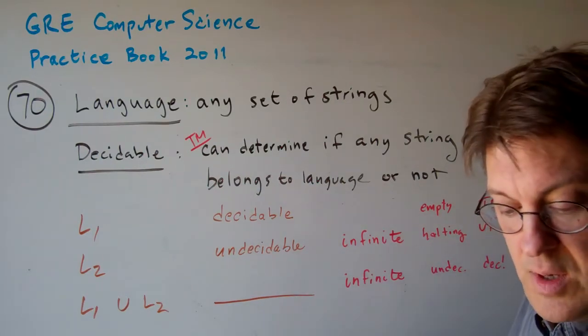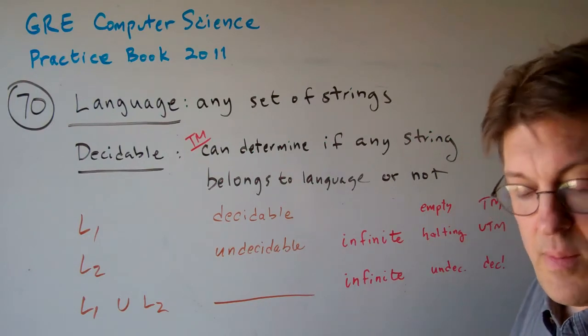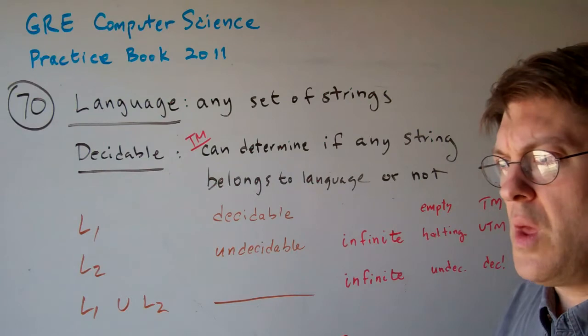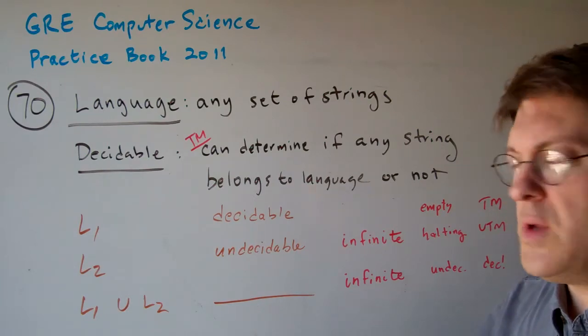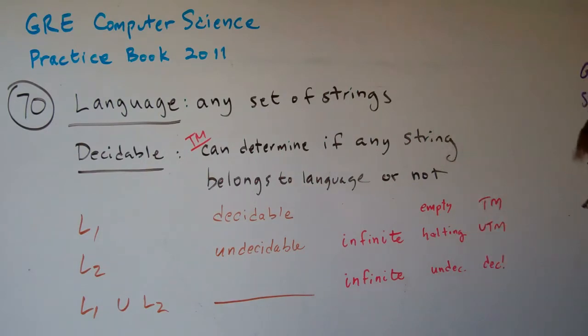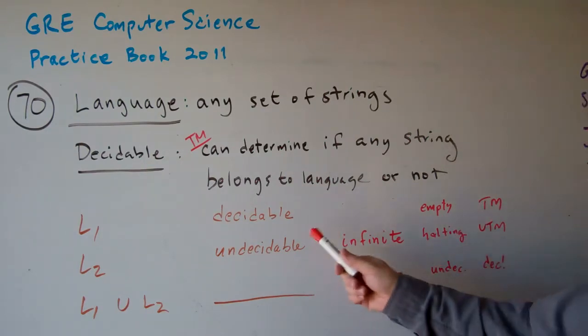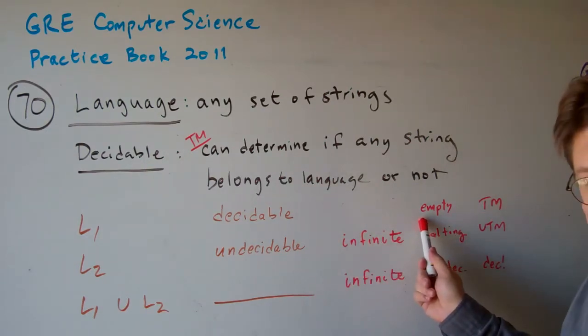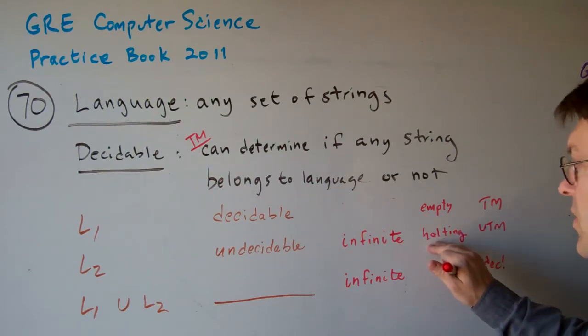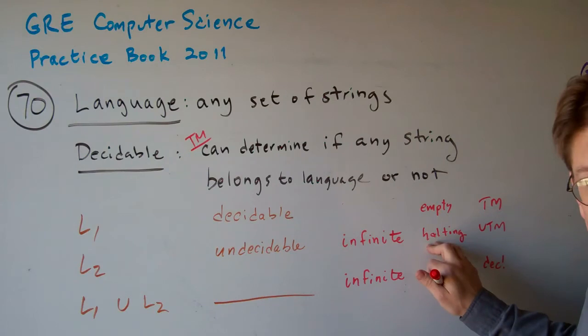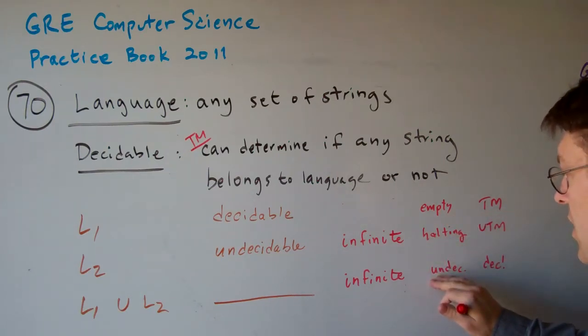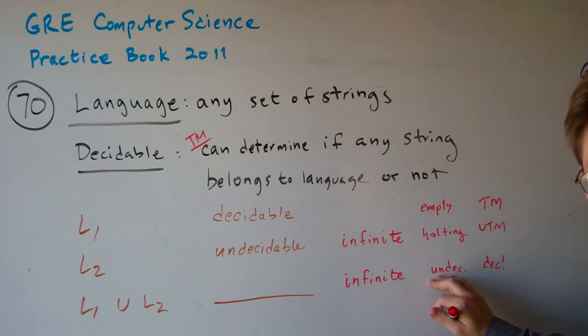Now, the question becomes, is this L1 union L2 decidable or not? Well, let's think about this. If L1 is the empty string or the empty set, and L2 is the halting problem, then the union of these two is going to be undecidable, the same as the halting problem.